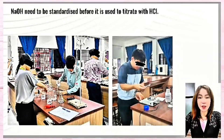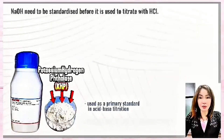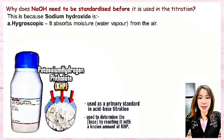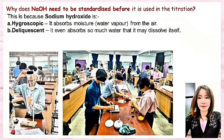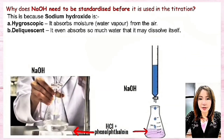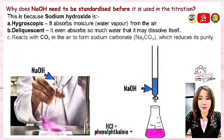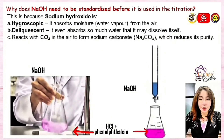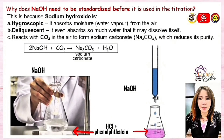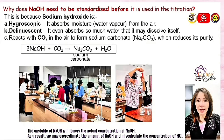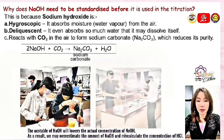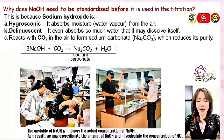So NaOH needs to be standardized before it is used to titrate HCl. This is because NaOH is hygroscopic — it absorbs moisture from the air, and it is also deliquescent, absorbing so much water that it may dissolve itself. On top of that, NaOH reacts with CO₂ from the air to form sodium carbonate, which reduces the NaOH purity. The instability of NaOH lowers its actual concentration.